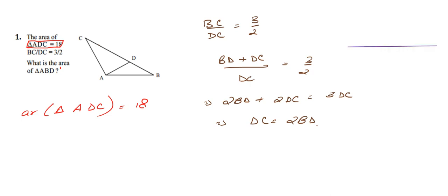Let us draw this triangle in a simpler way. Since the triangle is inverted, we can take BC as our base because BC is common to both triangles ADC and ABD. We draw the triangle with BC as base, BA and AC as the other sides, with point D on BC. We draw a height H perpendicular to BC at point E, and this height H is common to both triangles ADC and ABD.